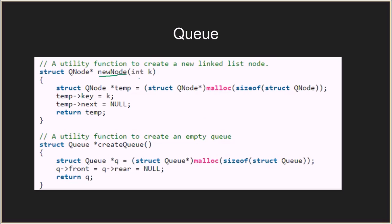The function new node takes an integer argument k. It creates a new node but does not add it to the linked list — it just creates and returns the node. We create a temporary pointer struct q node and allocate memory equal to the size of struct q node, initialize the key with k, and set the next pointer to null. Then we return the temp node.